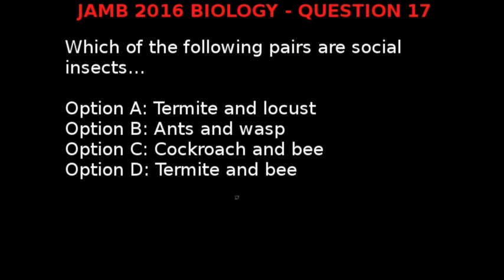To answer this question, let's look at what social insects are. Social insects are any of numerous species of insects that live in colonies and manifest three characteristics: group integration, division of labor, and overlap of generations. Social insects are best exemplified by all ants and termites, and some bees and wasps.